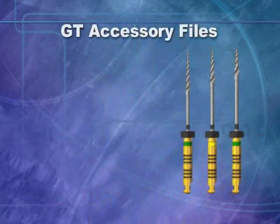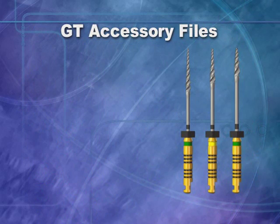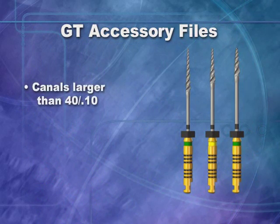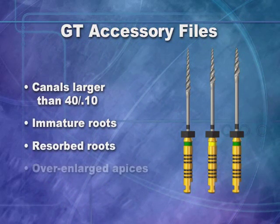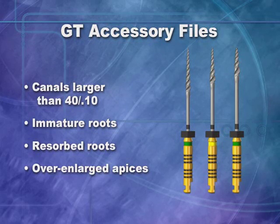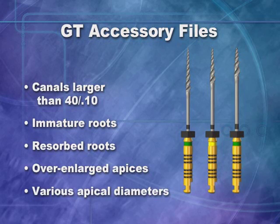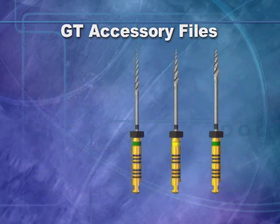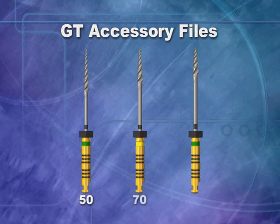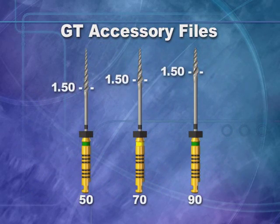Additionally, three accessory files complete the family. GT accessory files are needed in canals larger than a 40.10, and in large roots with immature, resorbed, or previously over-enlarged apices. These files can be used long or short to accommodate variations in apical diameters. All have a .12 taper. The tip sizes are 50, 70, and 90. The maximum flute diameter of the accessory files is 1.5 millimeters.